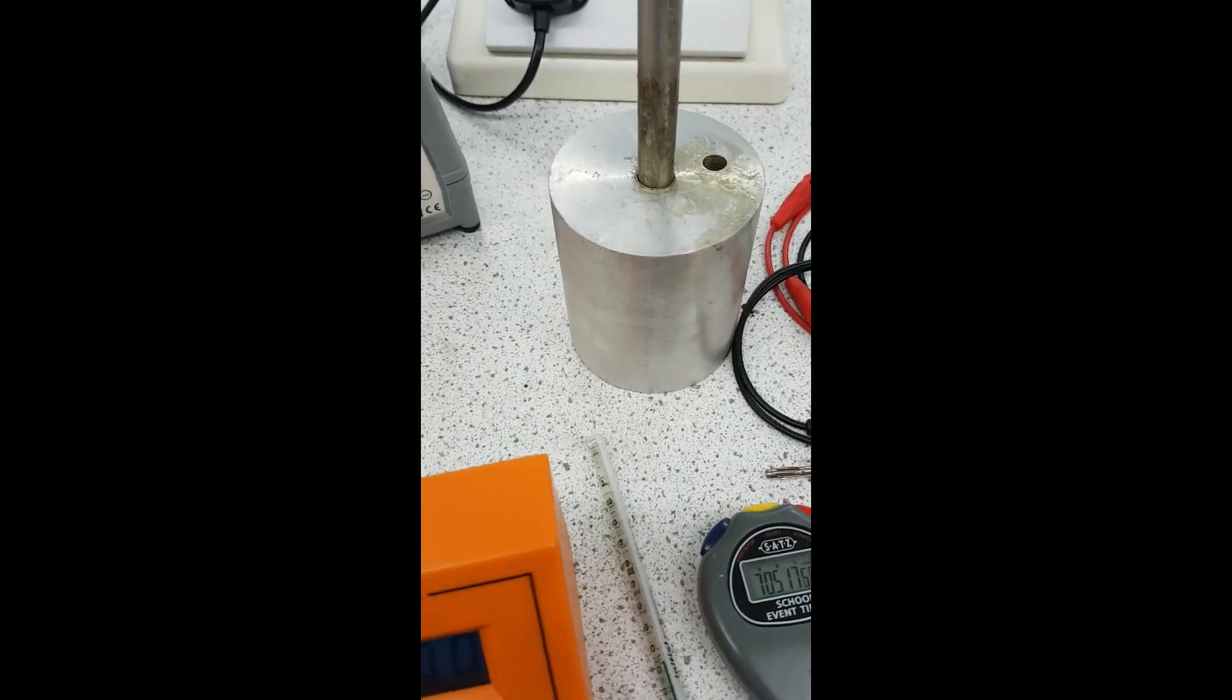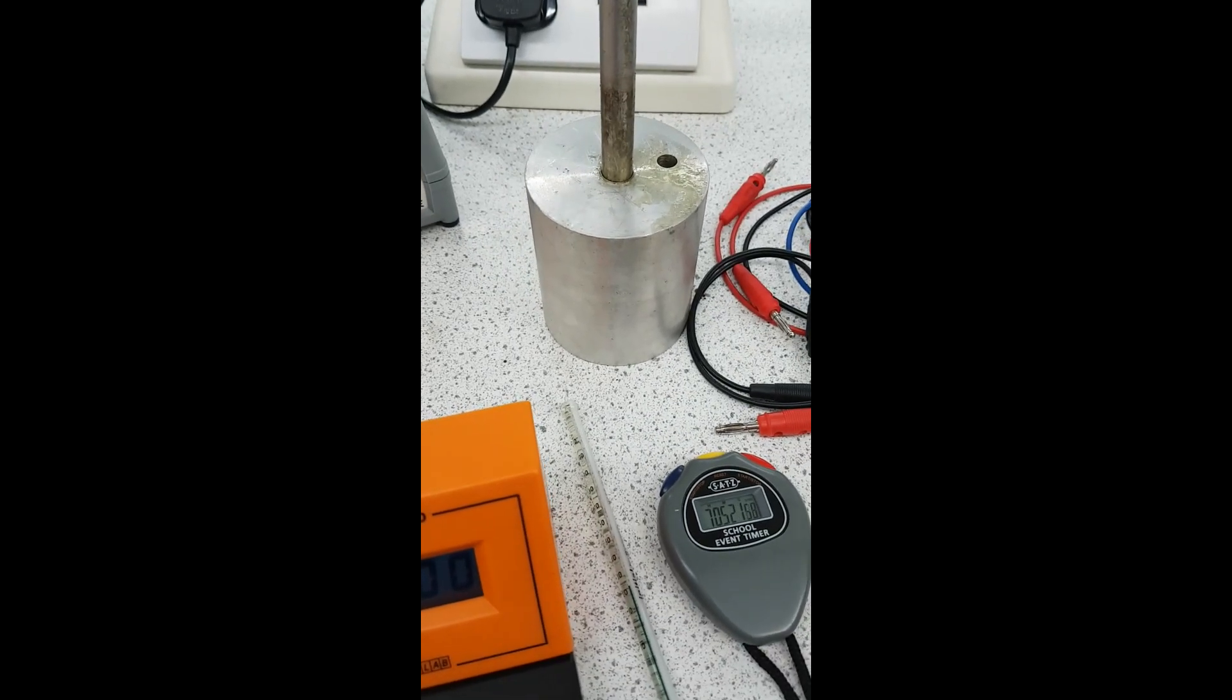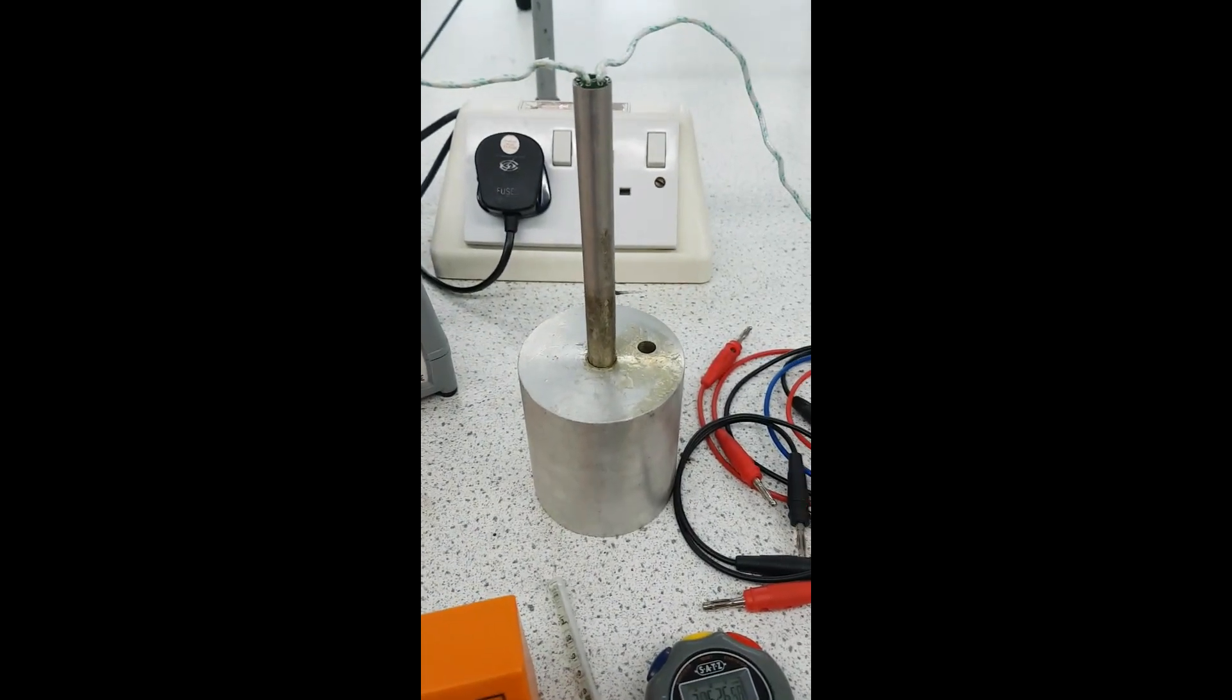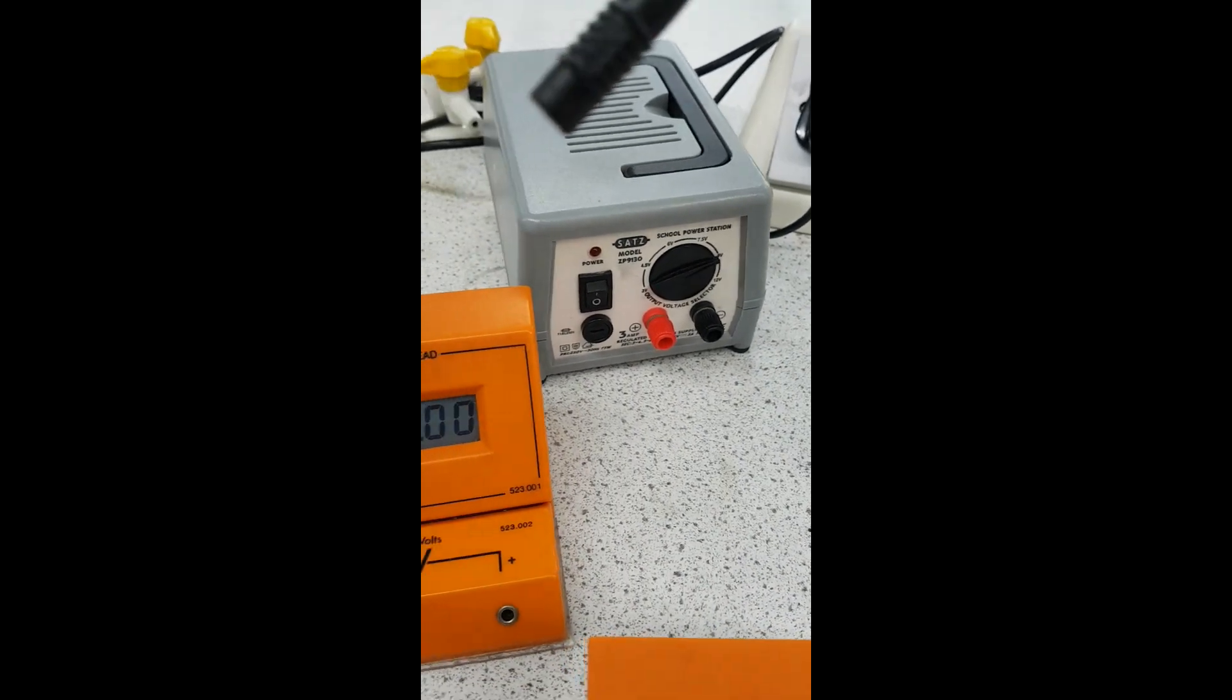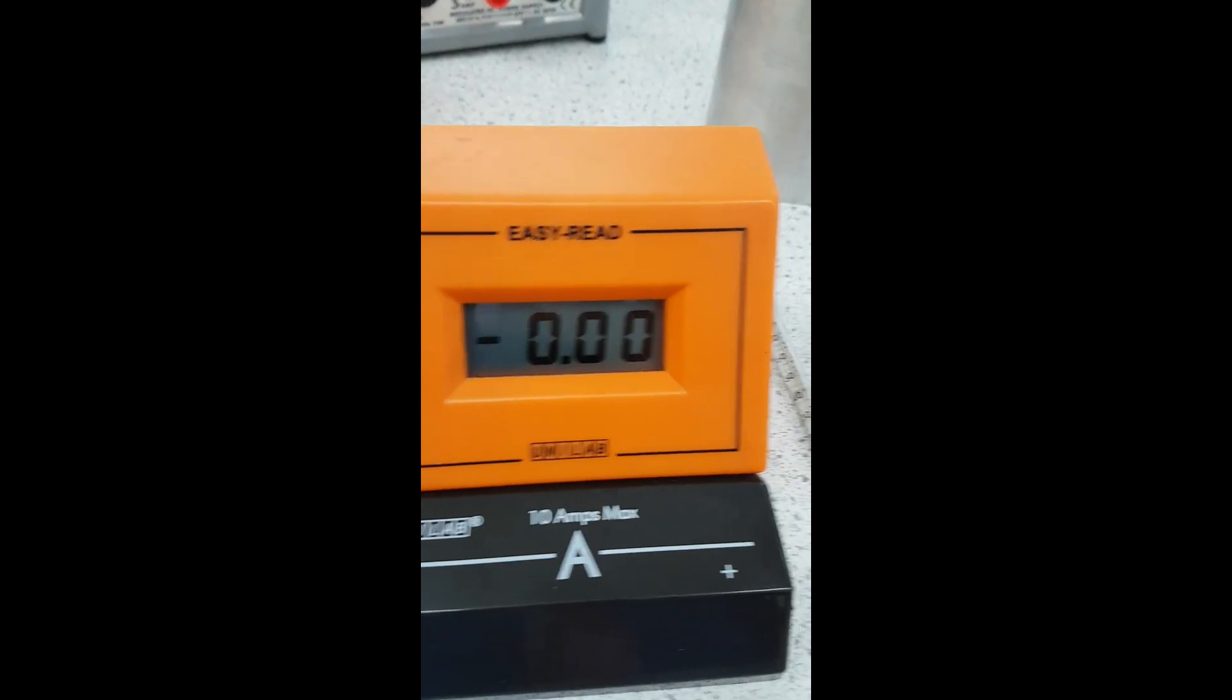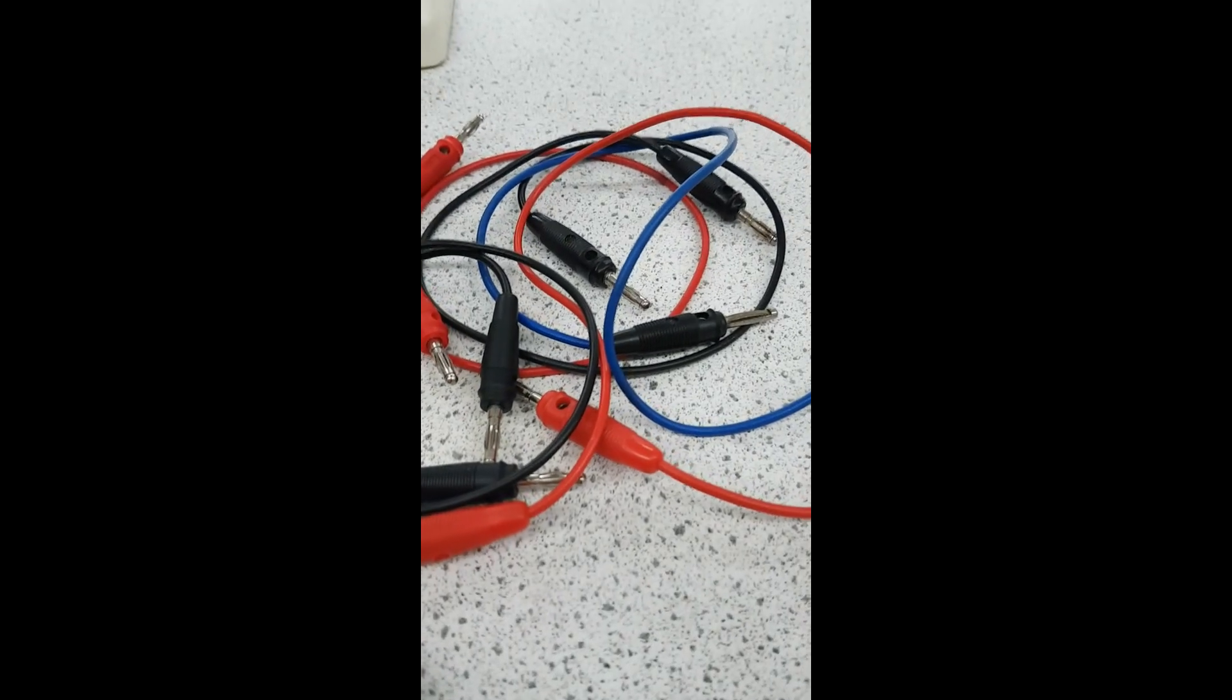Now, I'm telling you that the aluminum block is 1 kilogram. Of course, you can confirm that by using a weighing scale and checking the mass yourself if you wanted to. But they are all 1 kilogram. What you're going to need is a power pack, a voltmeter, an ammeter, a stopwatch, a thermometer and 5 wires.